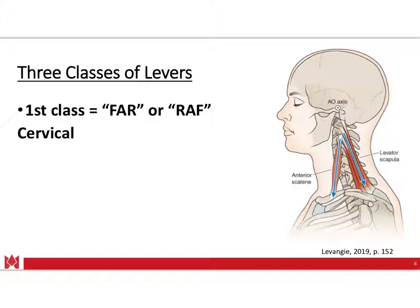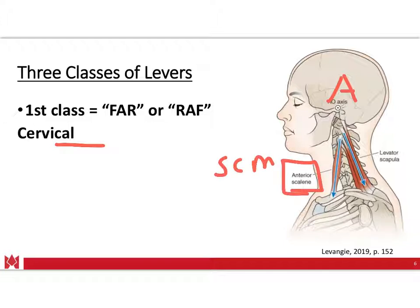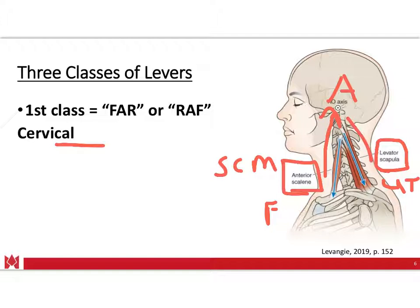So how does this look in the human body? A classic example is at the cervical spine. You have the skull pivoting around the atlanto-occipital joint. On the anterior side you have muscles like the anterior scalene and SCM creating force or resistance depending on whether you're doing cervical flexion or extension. On the posterior side you'd have the levator scapulae, upper trap, and splenius capitis. You can see they're all moving around that fulcrum or axis, just like a seesaw, as we move our heads up and down.